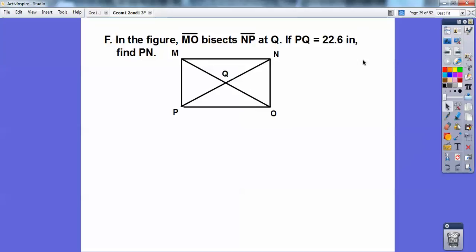So in the figure, segment MO, segment MO, bisects segment NP. So if it bisects it, then this is the midpoint of this segment right here. If PQ is 22.6, find PN. If this is 22.6, since that's the midpoint, this is 22.6. So the whole thing, by segment addition postulate, piece plus piece equals the whole piece. So there's 22.6. There's 22.6. So the whole length is 45.2.